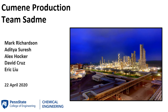Our project is to design a cumene production plant using propylene and benzene feed. Recently, Netline Chemical has developed a new catalyst for producing cumene, and we will be implementing this new catalyst into our production process and evaluate the feasibility of building the plant based on different economic factors.